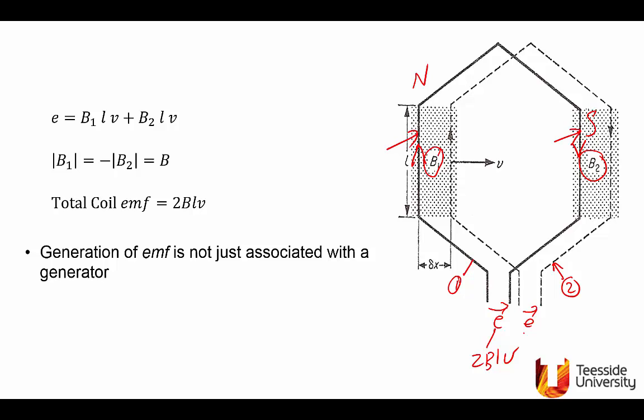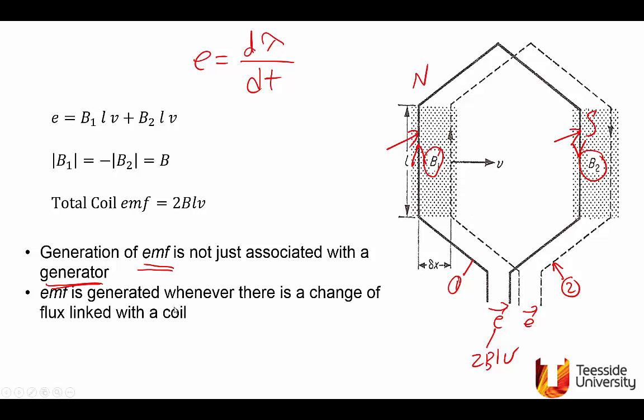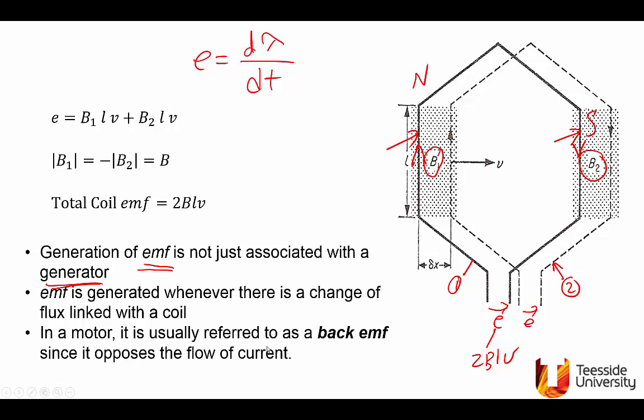Observation. EMF generation is not just associated with generator. EMF E will be produced in any circuit that is linked by flux that is changing with time. Whenever there is change of flux linking the coil or the circuit, there will be EMF. So this EMF is also produced, generated in the motor, but in the motor we normally refer to it as the back EMF. Why back EMF? Because it opposes the flow of the current into the motor. We will come to that in more detail when we discuss specific motor topologies. See you next time.